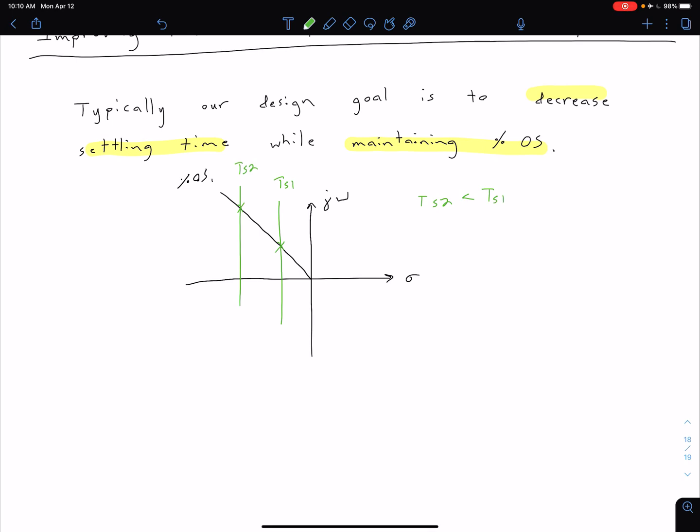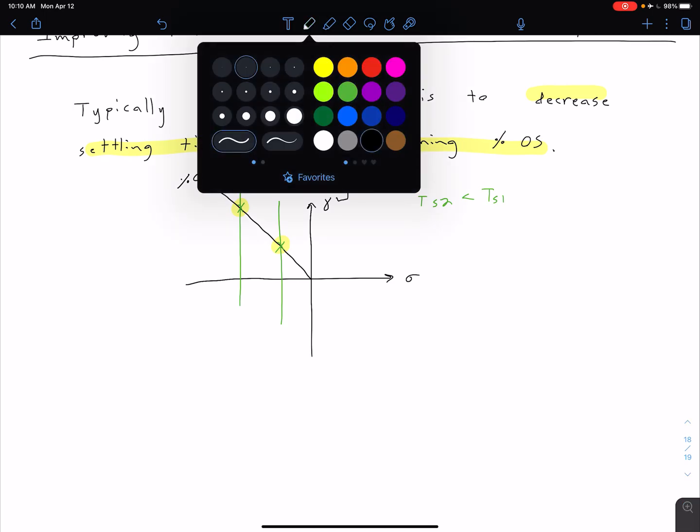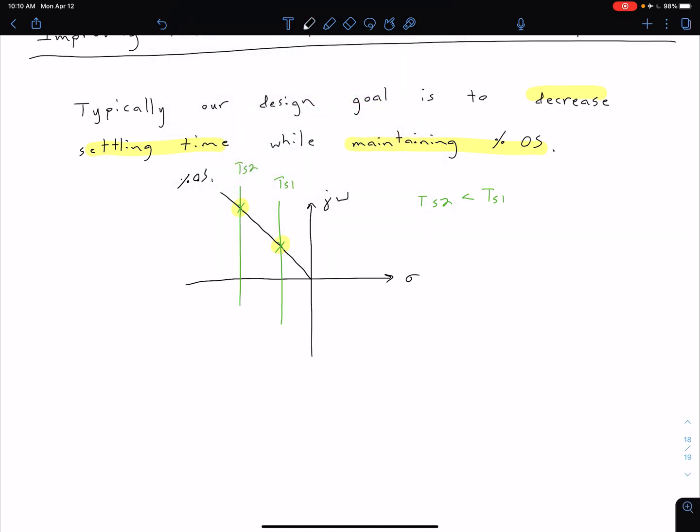The goal then is how do we actually move our root locus so that pole location is moving from this initial point to the secondary point. We can also see in this diagram that we're actually decreasing our peak time as well, because our point is going to be moving up on our imaginary axis and horizontal lines corresponded to constant peak time. But typically the settling time is going to be a parameter that we're more interested in. If you want to review the relationships between these parameters in the S-plane again, you can see that on page 151 in the 8th edition textbook.